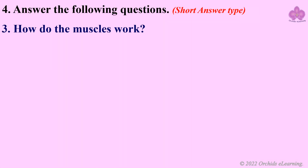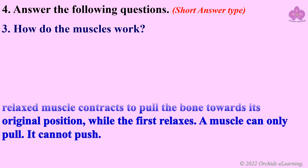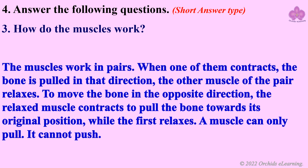How do the muscles work? The muscles work in pairs. When one of them contracts, the bone is pulled in that direction and the other muscle of the pair relaxes. To move the bone in the opposite direction, the relaxed muscle contracts to pull the bone towards its original position while the first relaxes. A muscle can only pull — it cannot push.